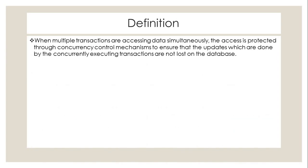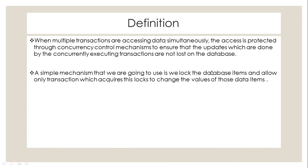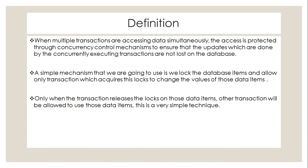This is what we mean by consistency. When multiple transactions are accessing data simultaneously, the access is protected through a concurrency control mechanism. Concurrency control ensures that executing transactions are not lost on the database. A simple mechanism is to lock the database item and allow only the transaction that has acquired this lock to change the value. Once the transaction is complete, it releases the lock and then another transaction can use it. Using this technique, we maintain consistency.